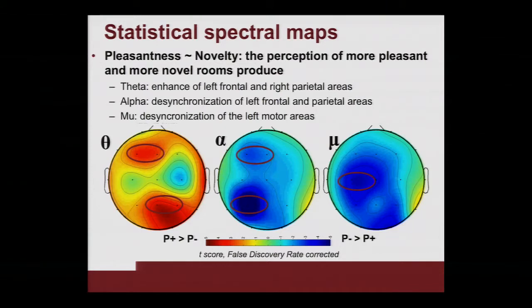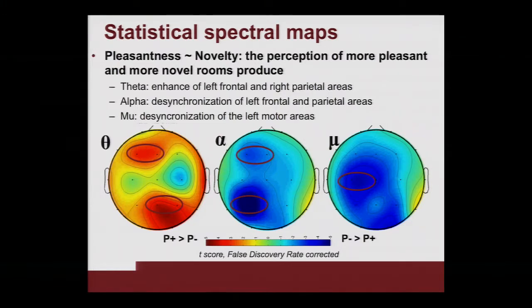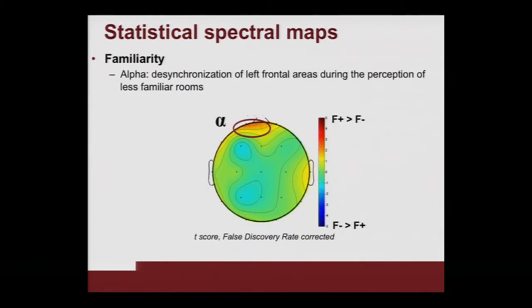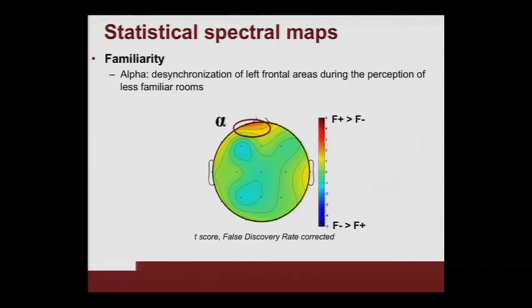With red we highlighted the increase of activation due to the perception of pleasant rooms, while in blue we depicted the increase of activation in the opposite condition. Both pleasantness and novelty produce an enhancement of the left frontal and right parietal areas in the theta band, while in alpha we see synchronization of the left frontal and parietal areas. The mu rhythm synchronizes over the left motor areas. For familiarity, we observed statistically significant results only in the alpha band, showing synchronization of the left frontal areas during the perception of less familiar rooms.